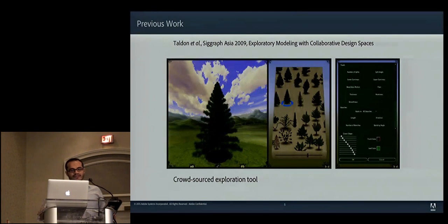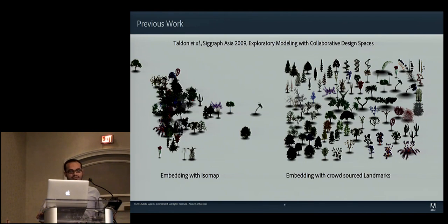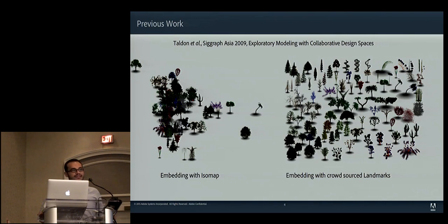One of the interesting attempts to solve this problem was by Talden, and they were mainly creating a crowdsource exploration tool. They embed sample designs into a crowdsource landmark space, where landmarks are created by super users who are more experienced than the average user in the database. This embedding creates a lower dimensional space better than conventional parameter embedding, and users can navigate through the sample models in this space for selecting their target design.